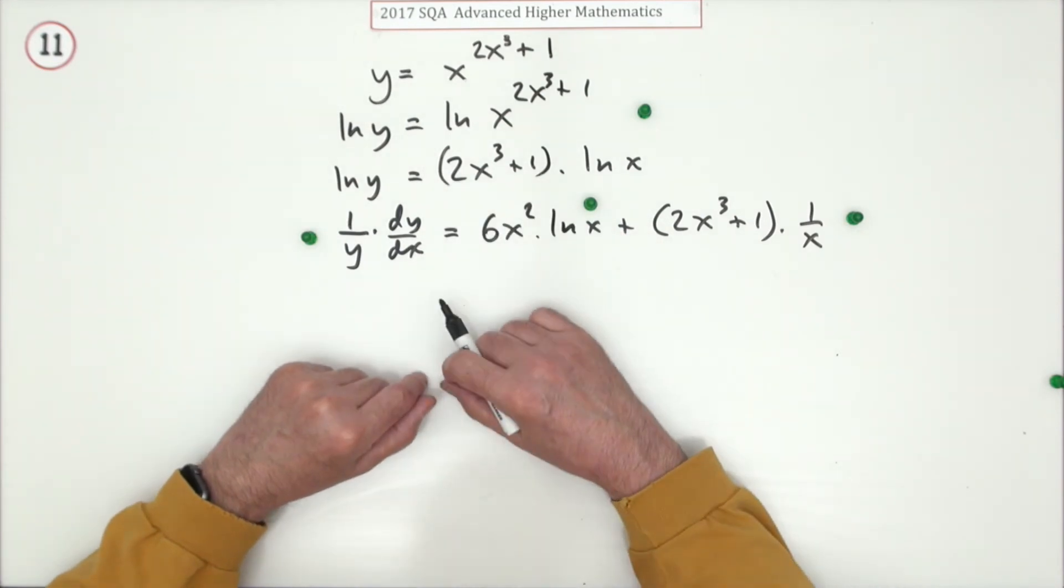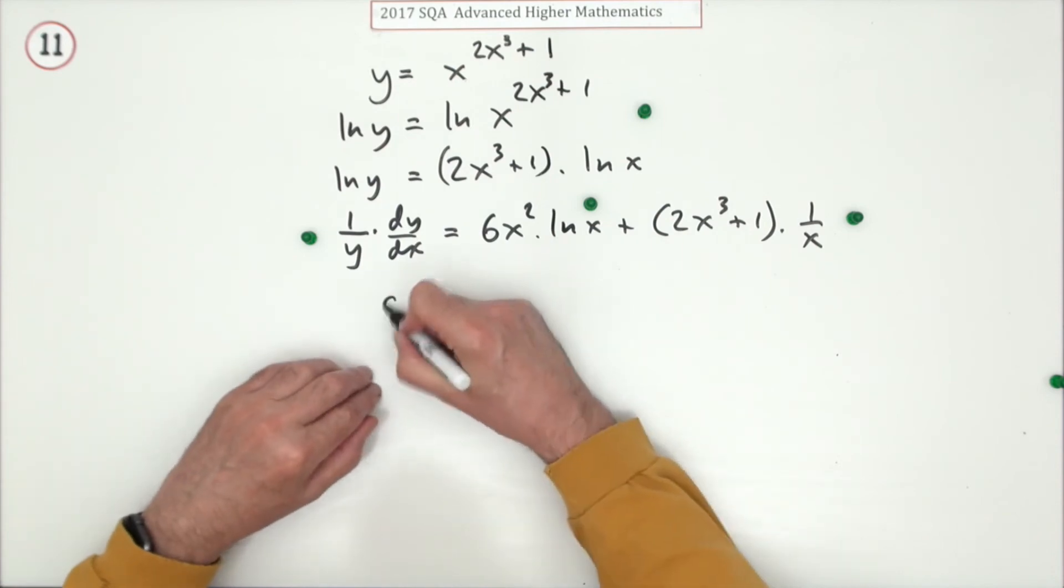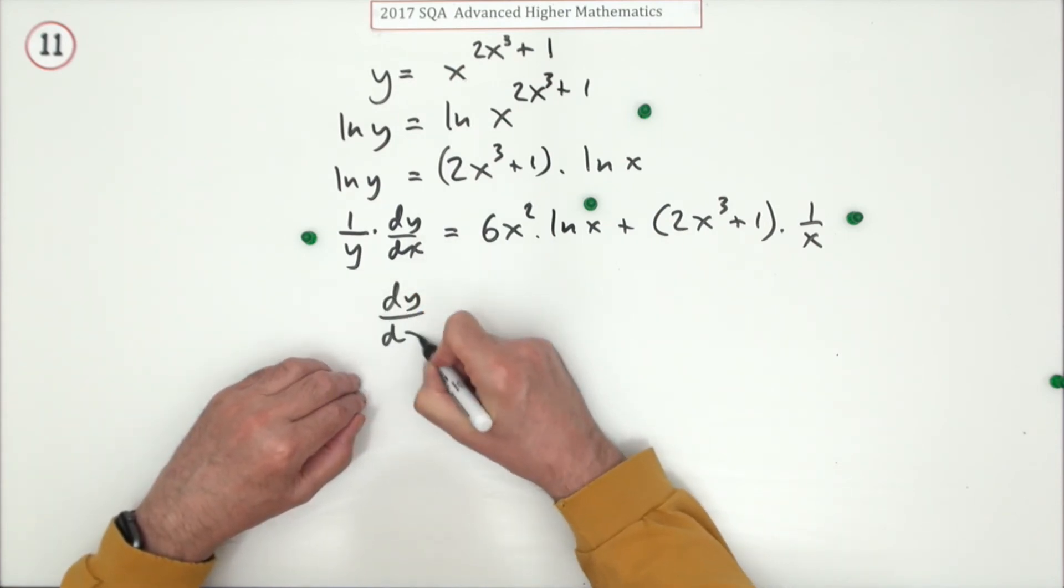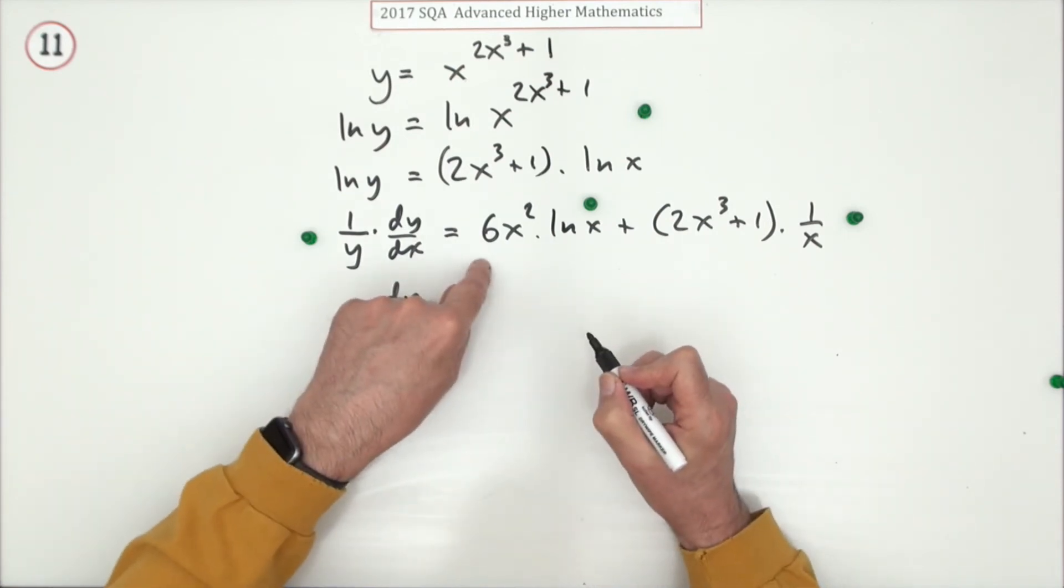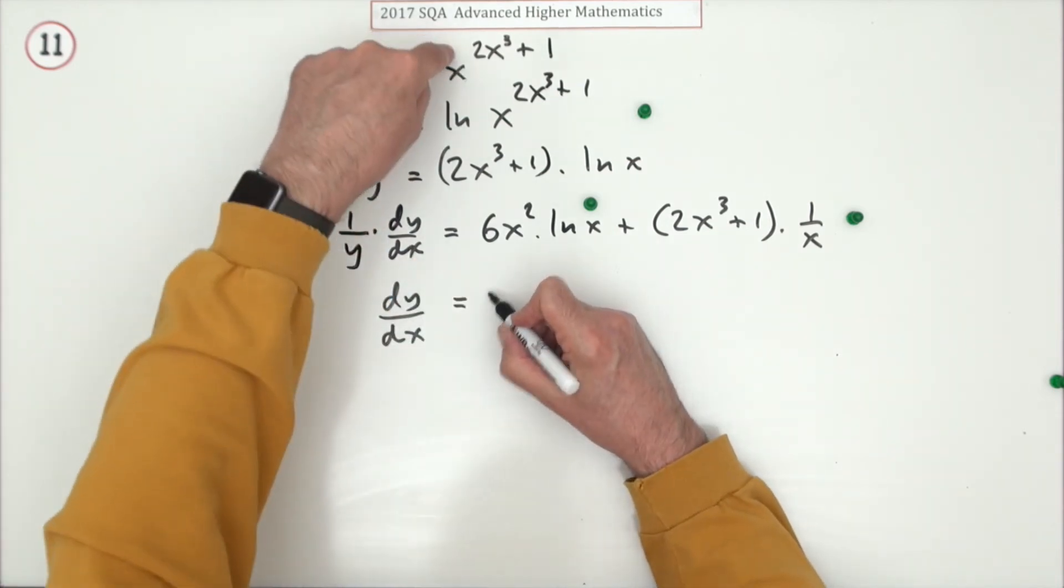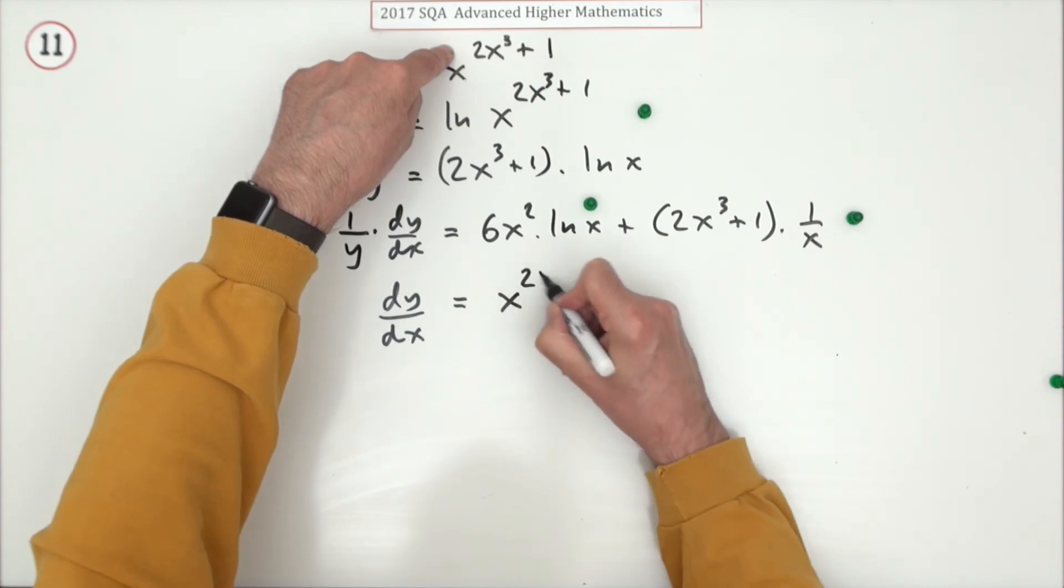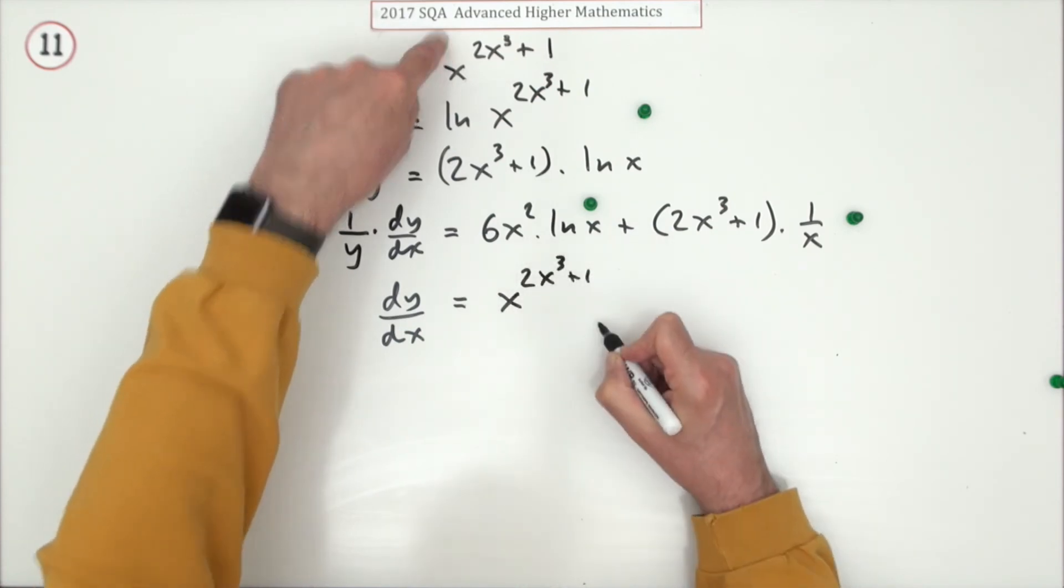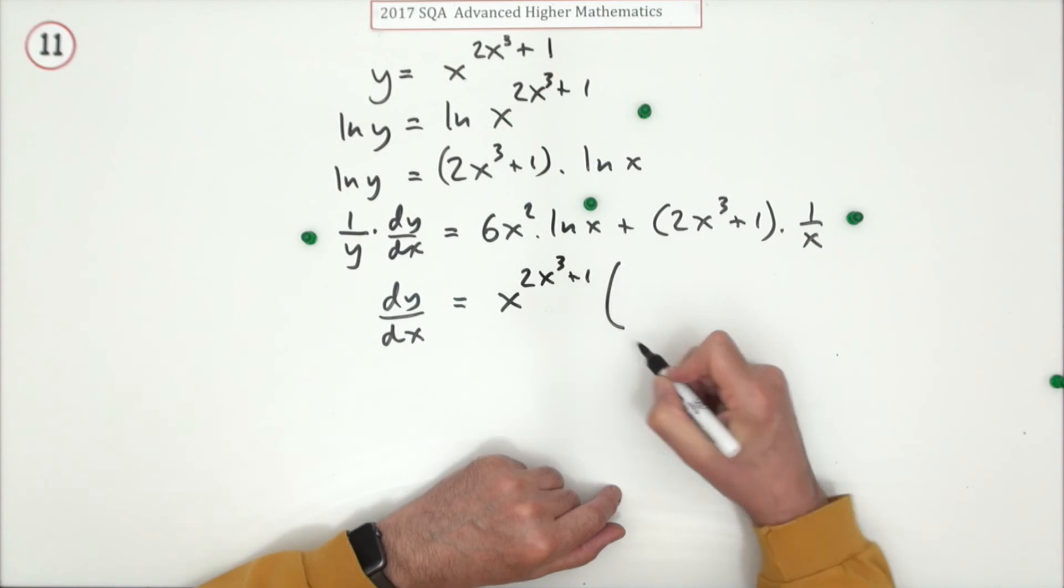Now finally, so what's dy by dx? That just means taking the y across. So when you take that y across, that y will actually be this, it'll be x to the power 2x cubed plus 1. That will multiply this side.